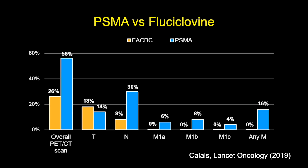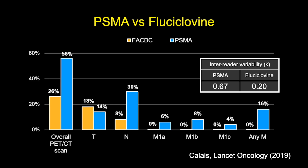This was studied prospectively. The UCLA group did a head-to-head comparison of fluciclovine — also called FACBC — and PSMA in patients after radical prostatectomy. They showed that fluciclovine had about half the detection rate of PSMA. More importantly, PSMA PET detected disease in metastases and nodes at a much higher rate than fluciclovine, while fluciclovine primarily saw disease in the prostate bed. Additionally, there's a statistic called Cohen's Kappa: 1 is perfect agreement between readers, 0 is no agreement. This study in Lancet Oncology showed much higher inter-reader agreement when interpreting a PSMA PET compared to fluciclovine PET.